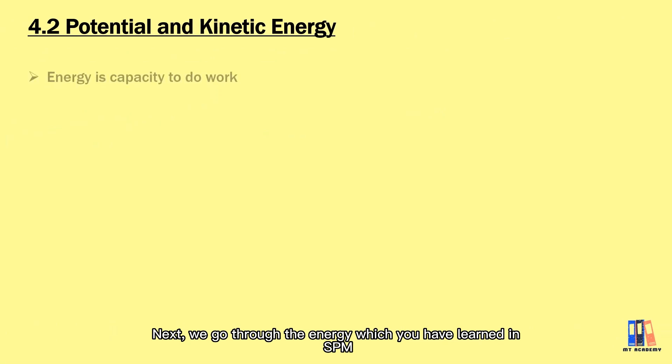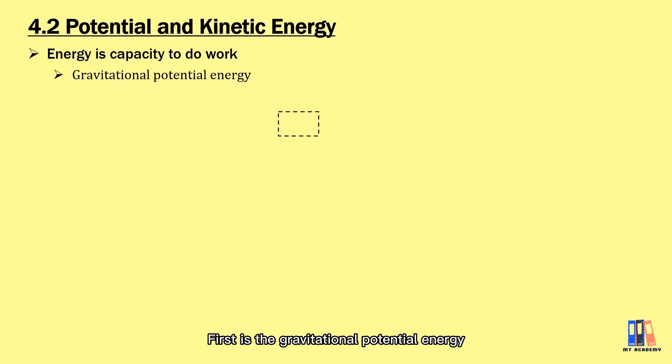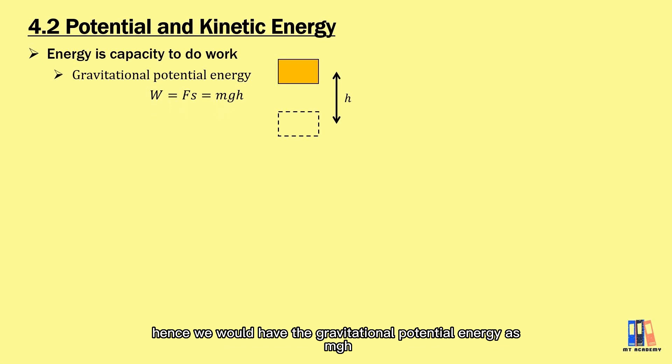Next, we go through the energy which we have learned in SPM. First is the gravitational potential energy. From the formula of work done, if we move up an object at a distance of h with constant velocity, force applied will be equal to the weight of the object, F = mg. Hence, we would have the gravitational potential energy as W = mgh.